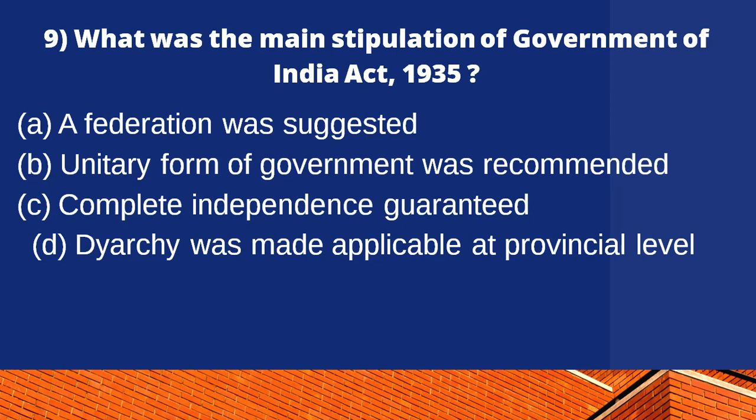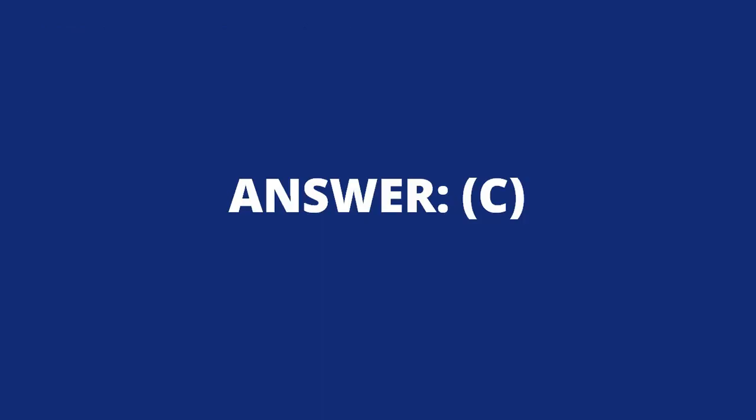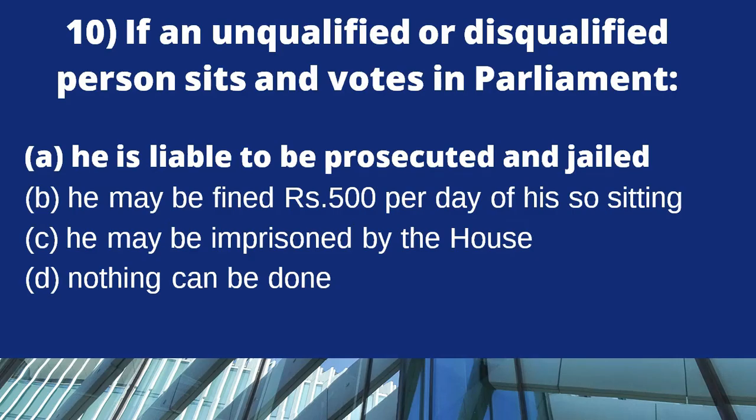What main recommendation was made regarding unitary form of government? Option C — complete independence was guaranteed and direct elections were made applicable at the provincial level. The right answer is option C — complete independence guaranteed.